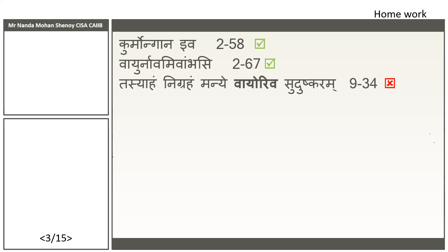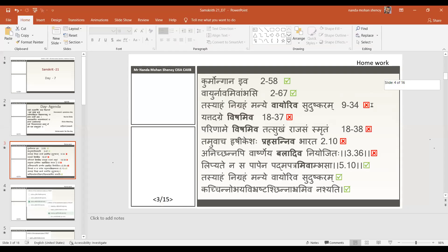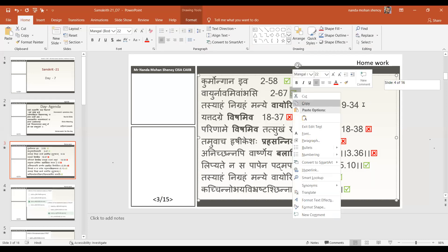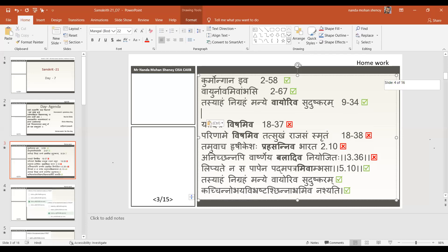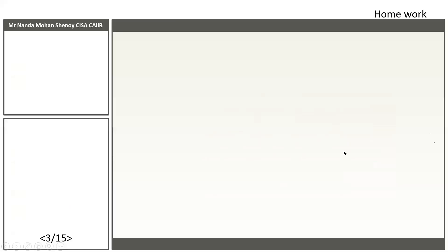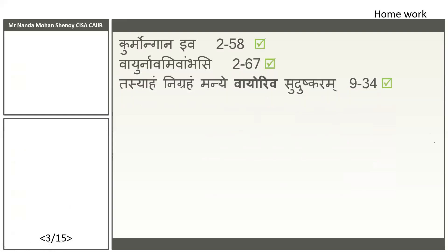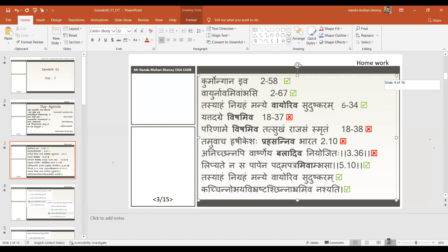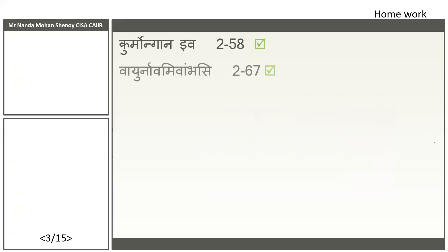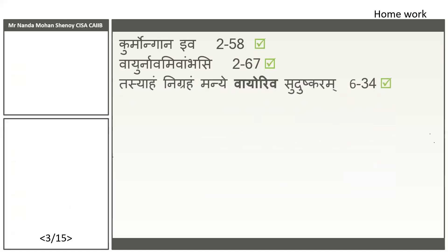Some of them shared 'Tasya Aham Nigraham Manye Vayoriva Sudushkaram'. This is actually right — a very good example. 'Vayuriva Sudushkaram' — this is from the 6th chapter wherein Arjuna says 'Chancharamhi Mana Krishna.' Controlling the mind is being compared with Vayu, the speed of wind. So this is also an example of an Upama.